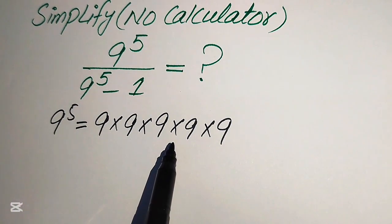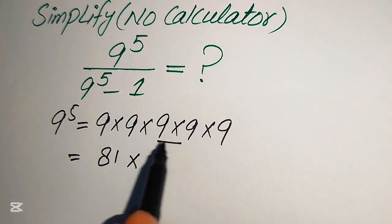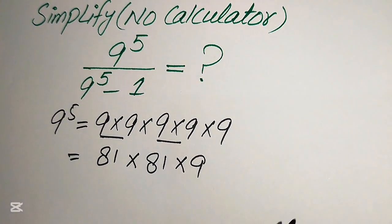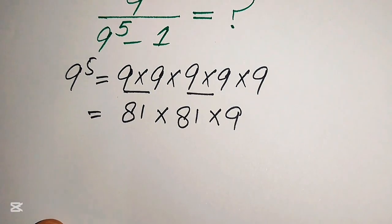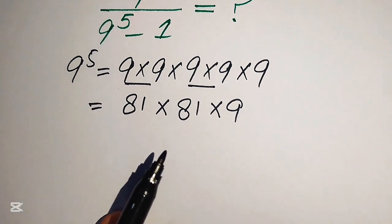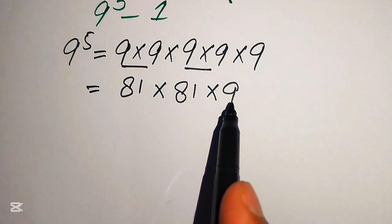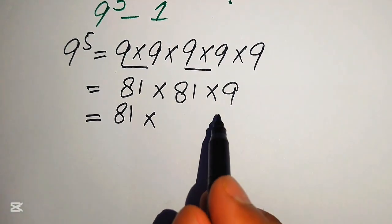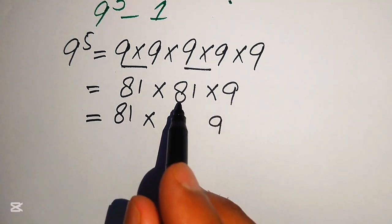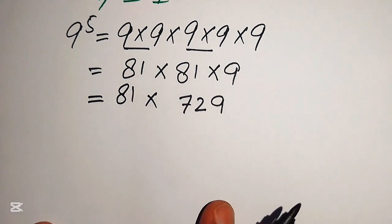We multiply 9 five times. First, 9 times 9 equals 81, and another 9 times 9 also equals 81, leaving one 9 remaining. In the next step, we multiply 81 by 9: 9 times 1 is 9, and 9 times 8 is 72, giving us 729.